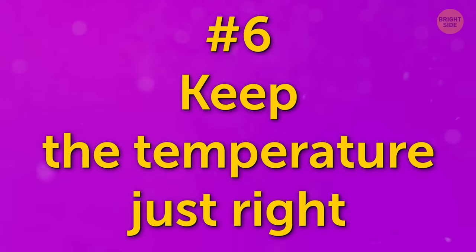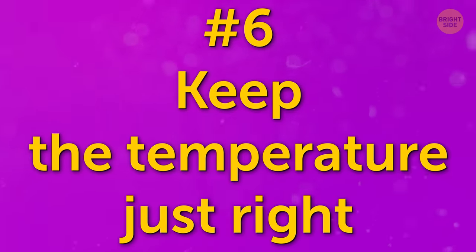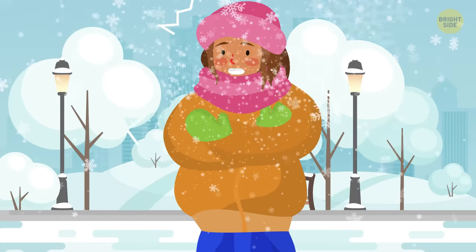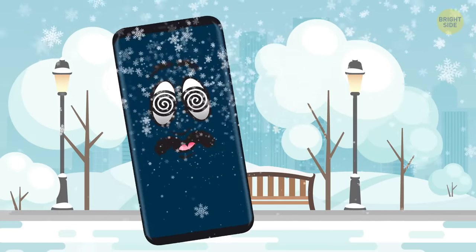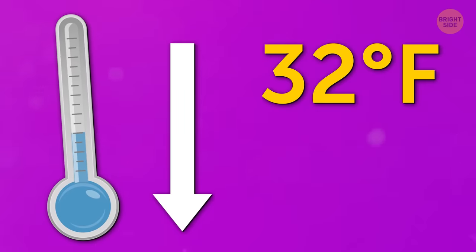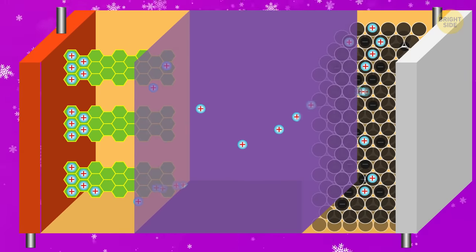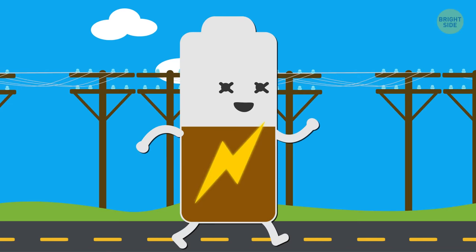Number 6. Keeping the temperature just right. Just like you'll shiver in the cold or sweat in the heat, your phone doesn't like extreme temperatures either. At temperatures below 32 degrees Fahrenheit, the cold air will slow down the reaction inside the battery, reducing the amount of power it can store.